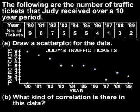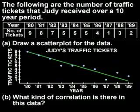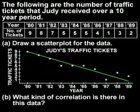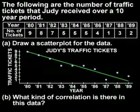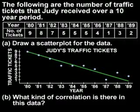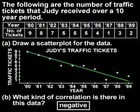Notice that there seems to be a best fit line. Draw a line that matches the points — this line will be the best fit line. In the scatter plot, notice that as the years get bigger, the number of tickets gets smaller. Since as the x values increase, the y values decrease, we say that there is a negative correlation.